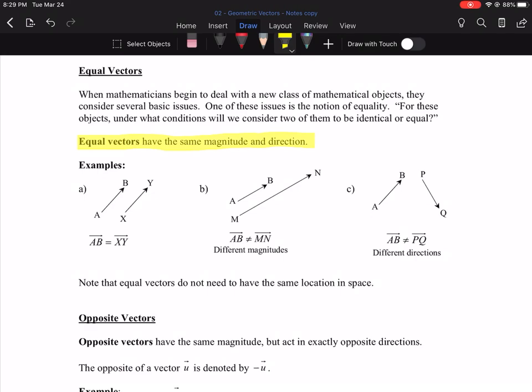And then, part C, AB and PQ. AB and PQ look like they're about the same length, but they're not going in the same directions, so we say they are not equal. Note that equal vectors do not have to have the same location in space. AB and XY was the important example there. Just because they weren't on top of each other doesn't mean they weren't equal. They were side by side, but they had the same magnitude and same direction.